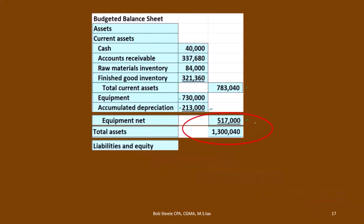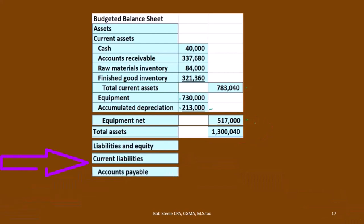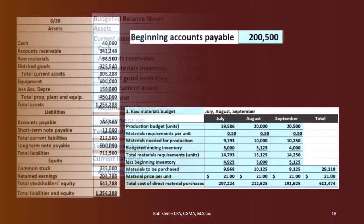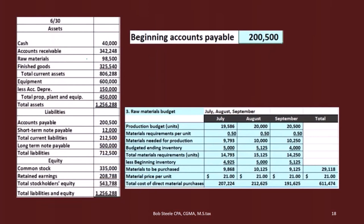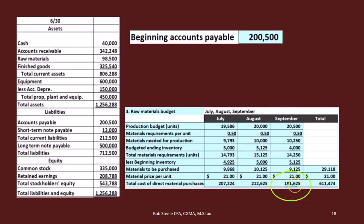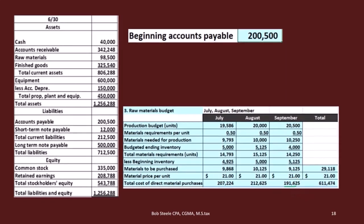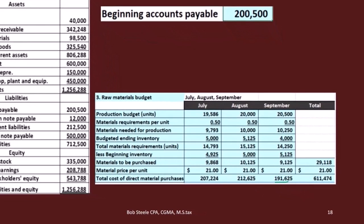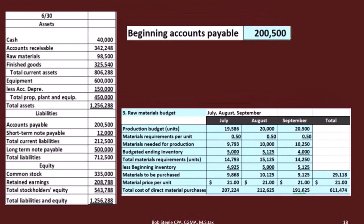Then we move on to the liabilities and equity, starting with the current liabilities. The first one is accounts payable. We're going to go through a similar calculation to what we did with receivables to figure out what's in there. This is a bit more simplified because of how this particular problem was set up. Let's go through the calculation the long way so we can see how it works and how it could be applied to a different setup.